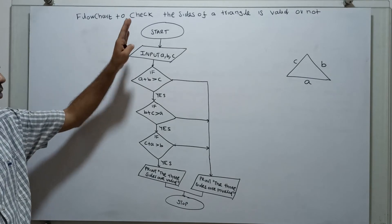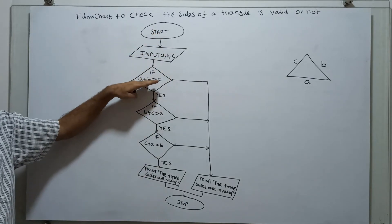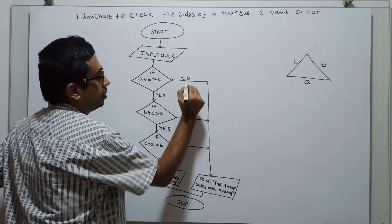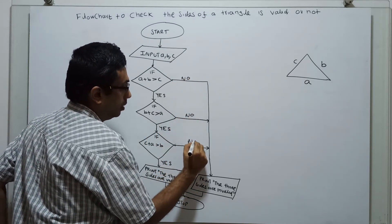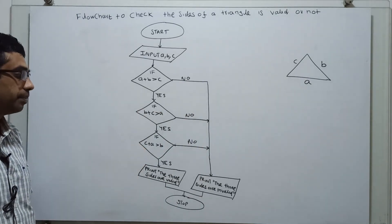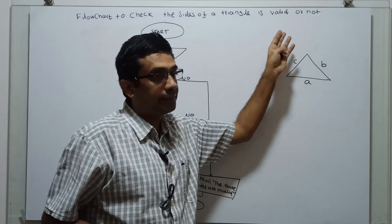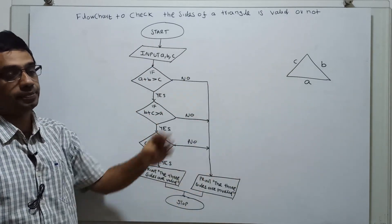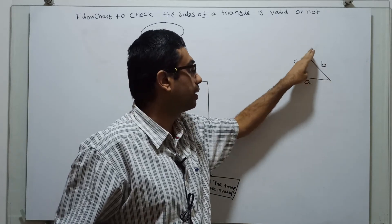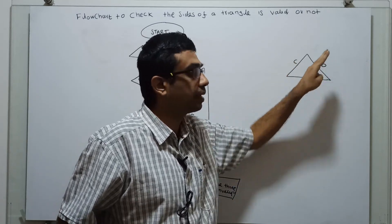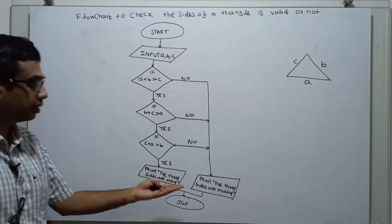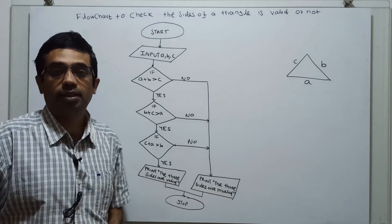That's it. So we are printing input, checking A plus B greater than C. So this is the yes flow. These are all yes. B plus C greater than A, it is also true. We are checking C plus A greater than B. So when you add two sides, it should be greater than the third side. When you add two sides, then it should be greater than the remaining side. A plus B greater than C, B plus C greater than A, C plus A greater than B. Then only the sides are valid. It can form a triangle. Otherwise, the sides are invalid. It can't form a triangle.